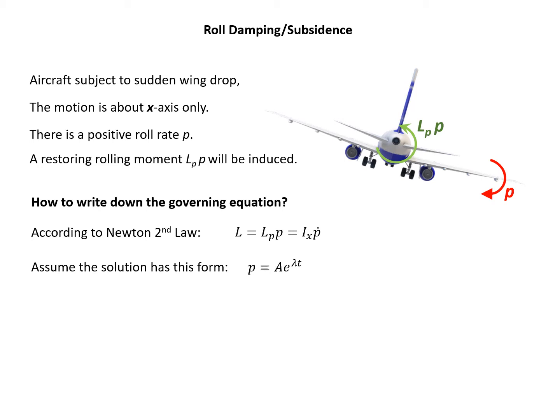Assume again, we have the solution P equals Ae to the power lambda t. Then the acceleration of P can be written as lambda p. We just plug in P dot, and the governing equation becomes Lp times P equals Ix times lambda p. The p can be eliminated, and then we have lambda equals Lp divided by Ix.